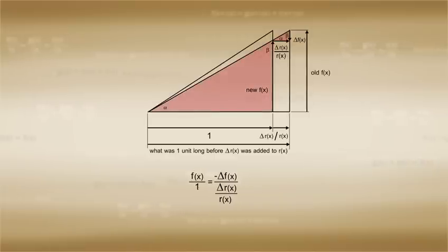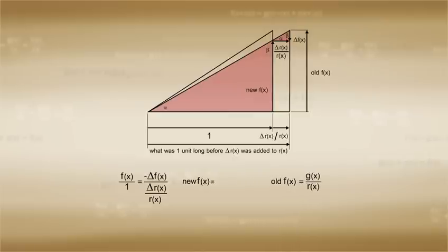But what is the f in this case anyways? We know that the old f is equal to g over r, and so the new f is equal to g plus delta g over r plus delta r.